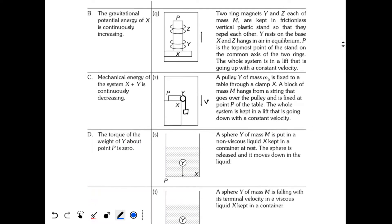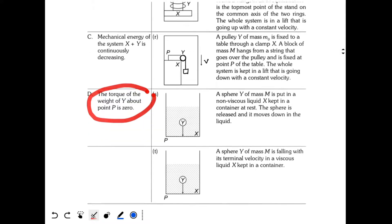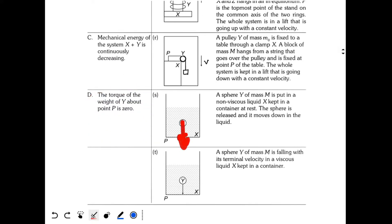Option C for S: mechanical energy of system X+Y continuously decreasing — since the liquid is non-viscous there is no viscous force to dissipate energy into heat, so the total mechanical energy of the system remains constant, not decreasing — C is wrong. Option D: torque of weight of Y about point P — Mg acts at a distance from P so torque is non-zero — D is incorrect. For S: B is correct.